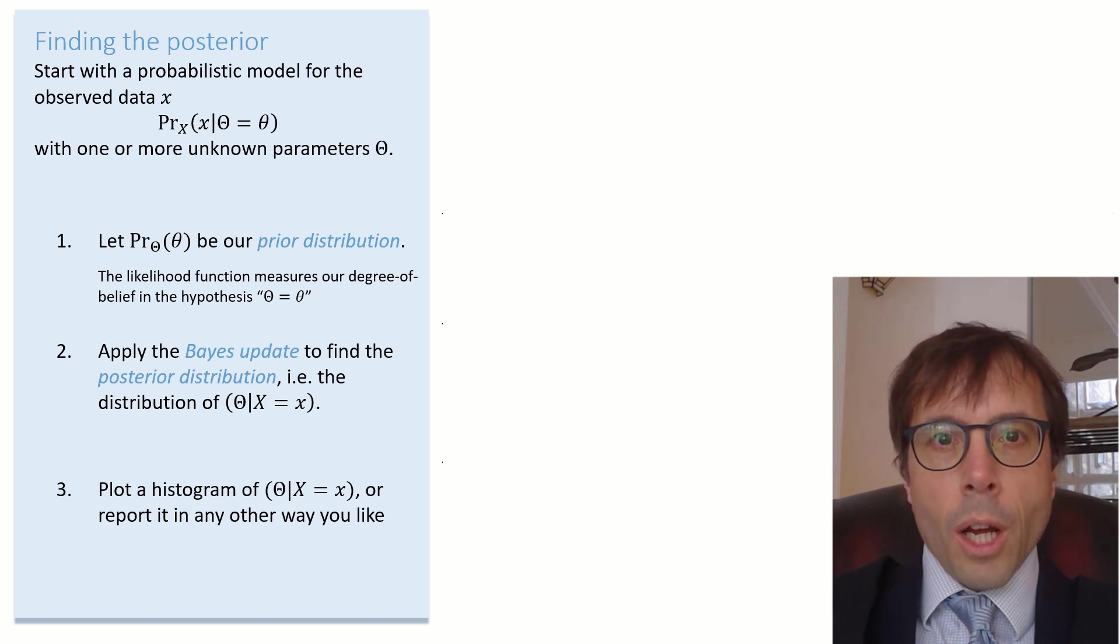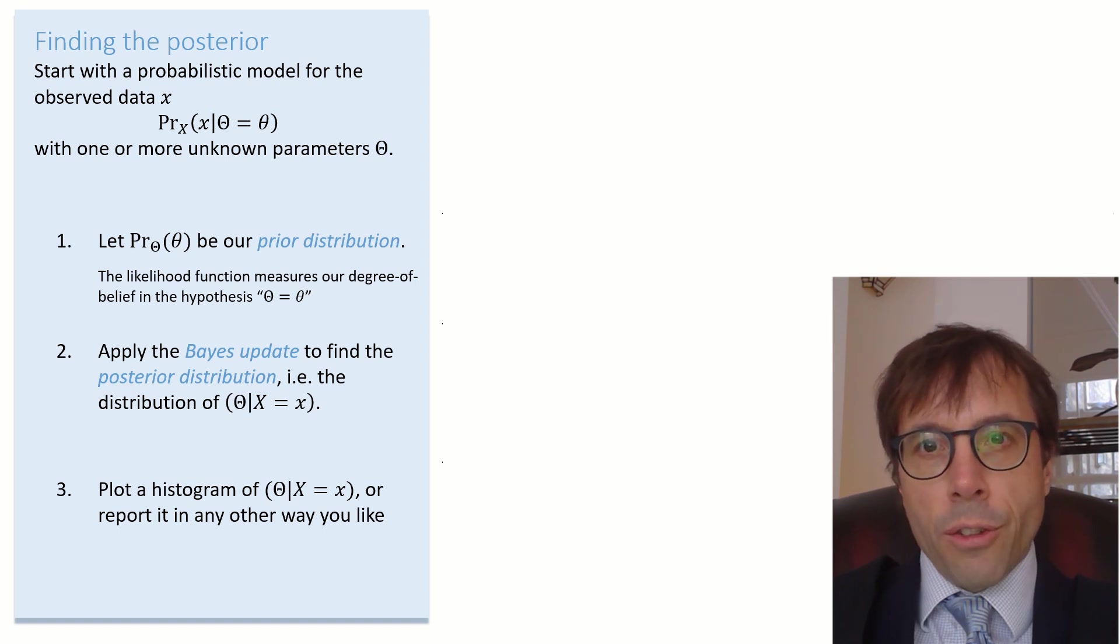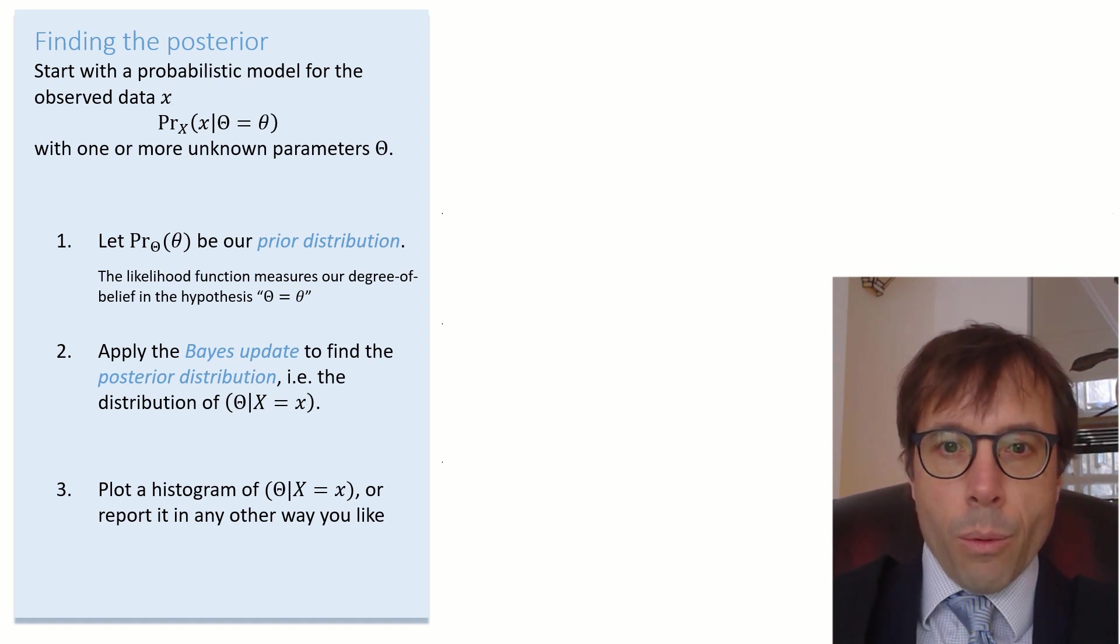Step two, apply Bayes' rule to find the posterior distribution of the random variable theta conditional on the observed data. This step is called the Bayes update step. Step three, once we know the posterior distribution, we could plot a histogram or report it in whatever other way we like.